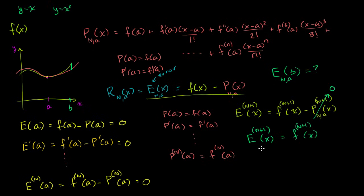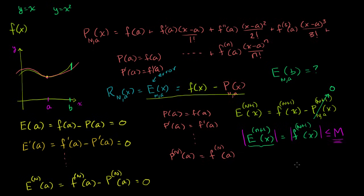So what we could do now — and we'll probably have to continue this in the next video — is figure out whether we can bound this. Can we bound this, and if we're able to find an upper bound on its magnitude — on its absolute value — if we can determine that it is less than or equal to some value m, then maybe we can do a little calculus, keep integrating it, and go back to bound the original error function. I'll take that up in the next video.